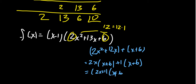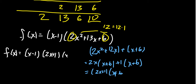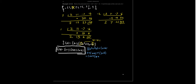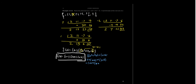Putting it all together, we have the complete factorization of f(x): (x − 1)(2x + 1)(x + 6). Looking back at the rational roots theorem list — plus or minus 1, 2, 3, 6, plus or minus 1/2, plus or minus 3/2 — our roots are x = 1 from (x − 1), x = −1/2 from (2x + 1), and x = −6 from (x + 6). All three numbers were on that list, and we would have found them eventually if we kept going.